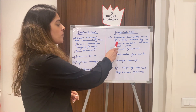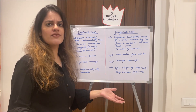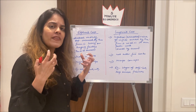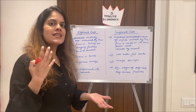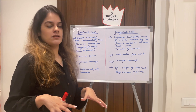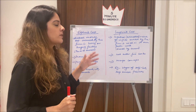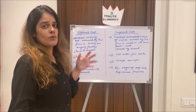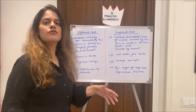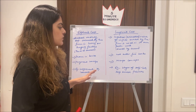Whereas implicit cost is the imputed or estimated value of inputs owned by the firm and used in its own production unit. For example, if I already own land or some heritage property and I start my business on that land, that comes under implicit cost because it's my own — I'm not paying to someone external to the firm. Explicit cost is shown in the firm's books because it is paid to someone outside the firm.